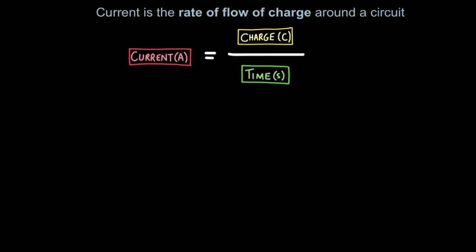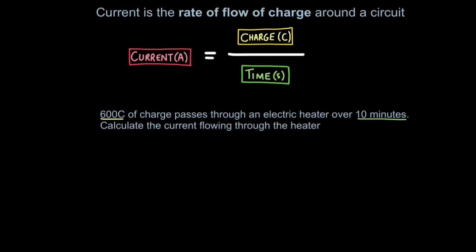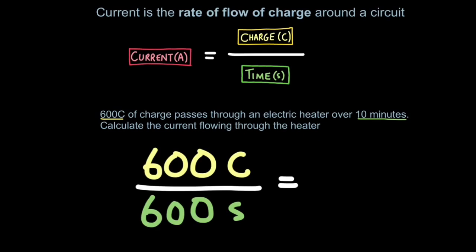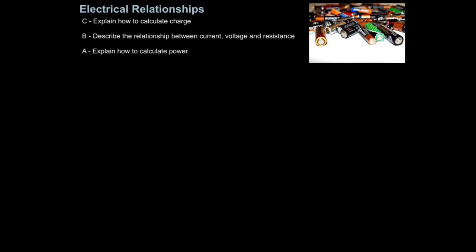Current can be defined as the rate of flow of charge around a circuit — in other words, how much charge flows over time. For example, if 600 coulombs of charge passes through an electric heater over 10 minutes, calculate the current flowing through the heater. We take 600 coulombs divided by the time. The time must be in seconds, so 10 minutes equals 10 times 60, which is 600 seconds. So 600 divided by 600 gives you 1 amp — that is the current. So that is how you calculate charge.